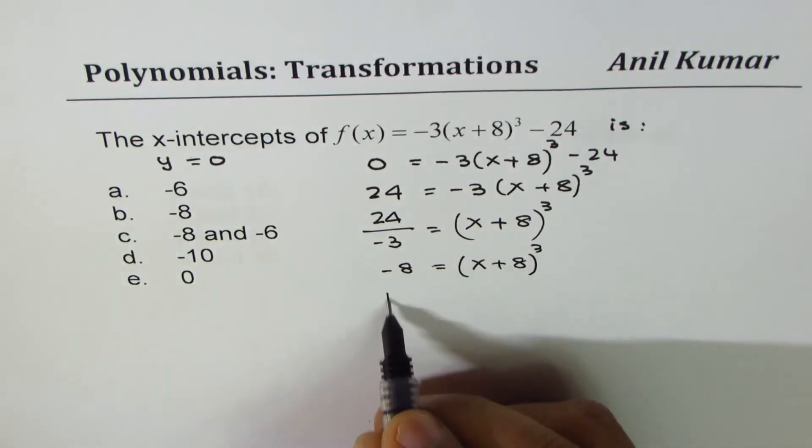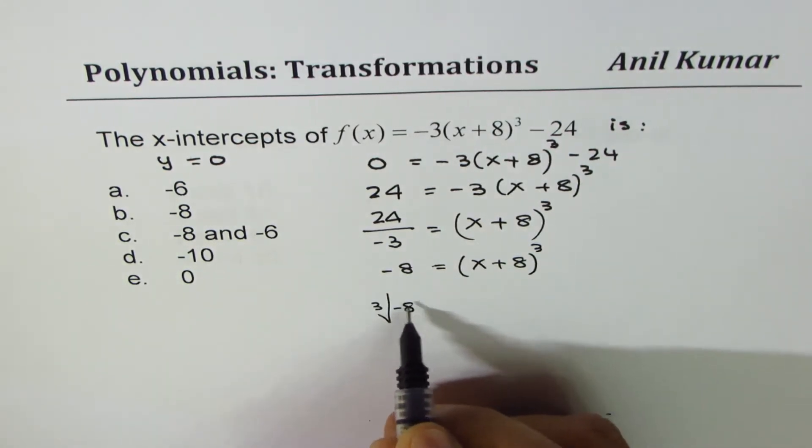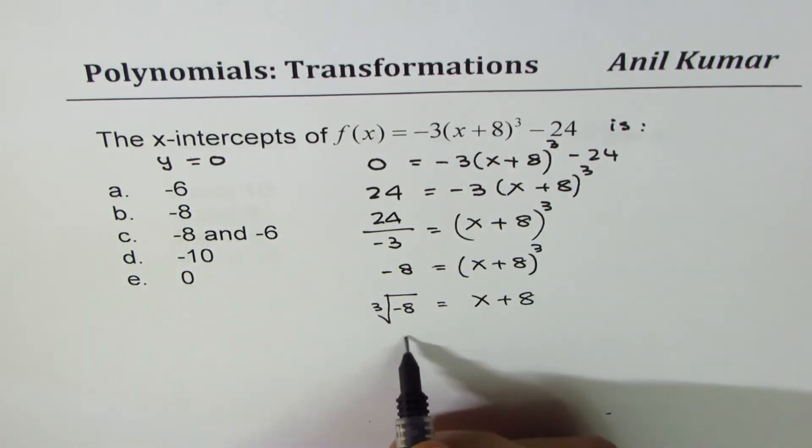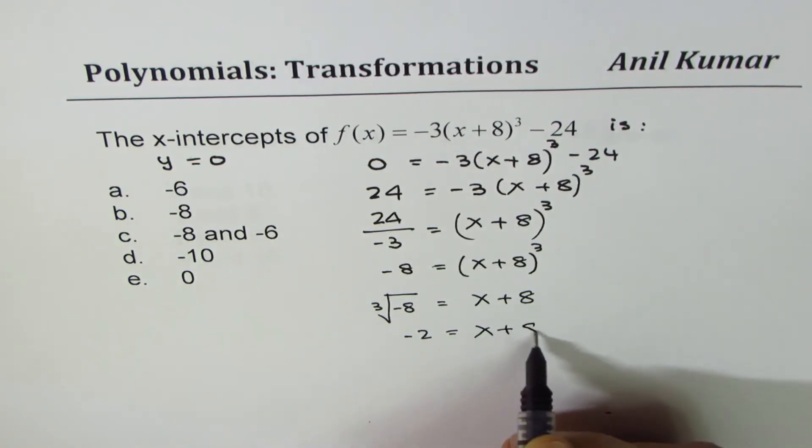Now cube root it. So when you cube root it, cube root of minus 8 is what? This side will be x + 8. Cube root of minus 8 is minus 2, right? x + 8.